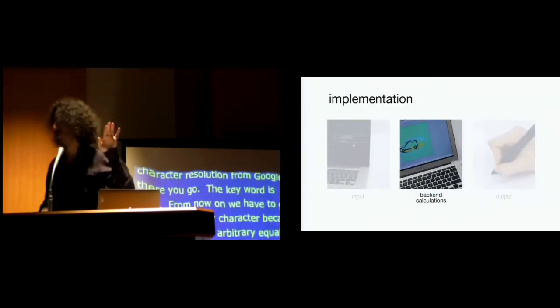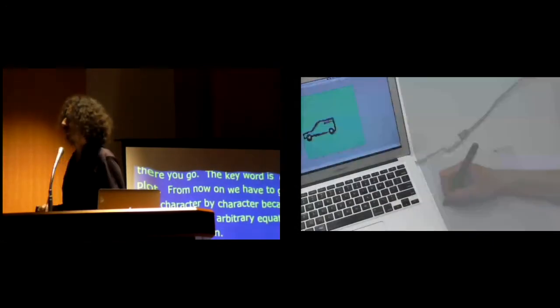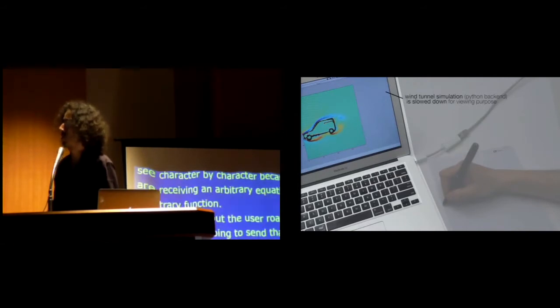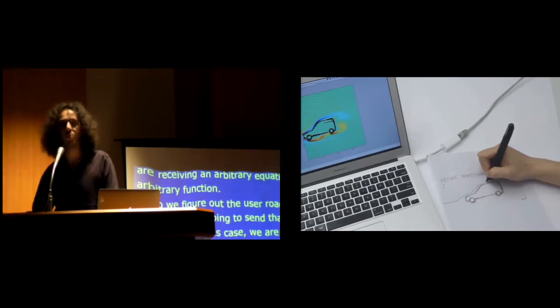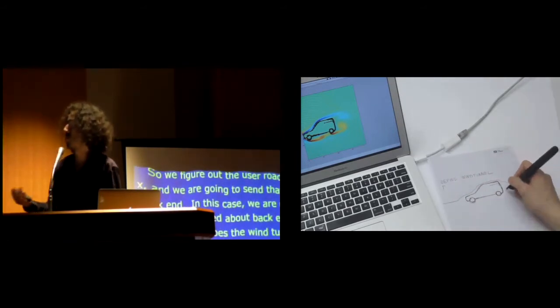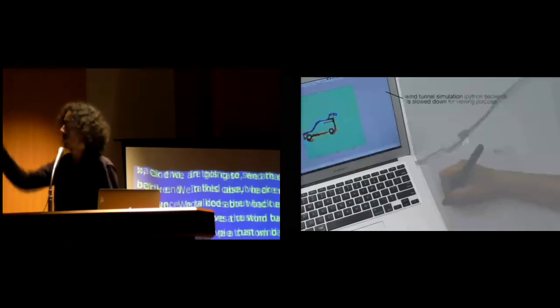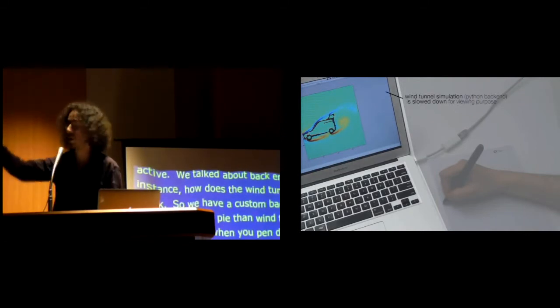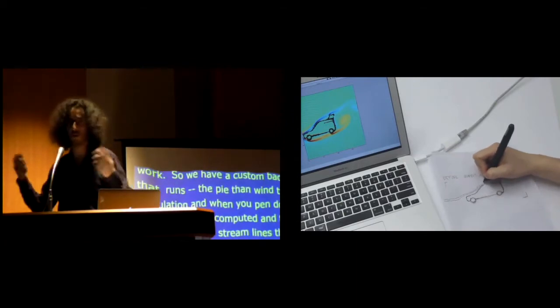So as I told you, we're using a NotoPen, which means we can digitize everything. We're using the OCR software optical character recognition from Google, which is called Tesseract. And there you go. A keyword is detected. This keyword is called plot. From now on, we've got to go and see character by character because we're receiving an arbitrary equation or some arbitrary function. So we figure out the user wrote sine of X and we're going to send that to a back end. In this case, we're using Octave, the software, to just plot arbitrary functions. All right. Talking a little bit about back end. You already know that with Octave, we can do any arbitrary function, but for instance, how does the wind tunnel work? So we have a custom back end that runs a Python wind tunnel simulation and when you pen down over there, that gets computed.